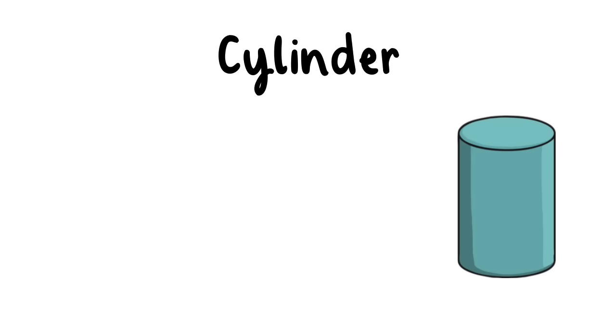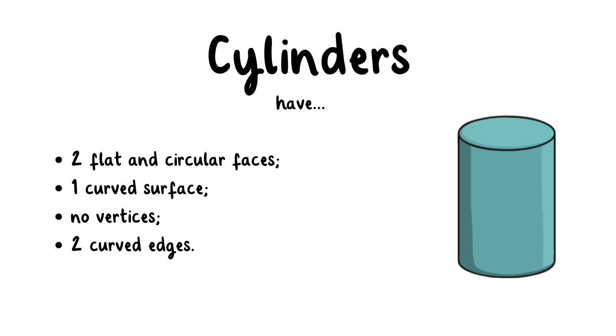This is a cylinder. Cylinders have two flat and circular faces, one curved surface, no vertices, and two curved edges.